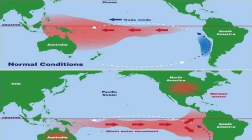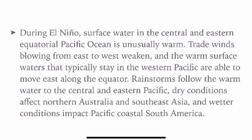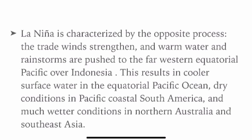These are all the details about El Niño. Ab iska bilkul ulta — La Niña. During El Niño, surface water in the central and eastern equatorial Pacific Ocean is unusually warm. La Niña is characterized by the opposite process — the trade winds are strengthened and the warm water and rain storms are pushed to the far western equatorial Pacific over Indonesia. This results in coolness of surface water in the equatorial Pacific Ocean, dry conditions on the Pacific coast of South America, and much wetter conditions in northern Australia and southern Asia.